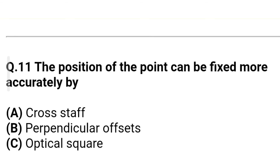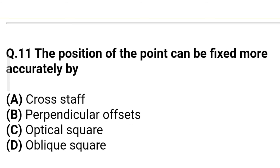Question 9: The position of a point can be fixed more accurately by — Option A: cross staff. Option B: perpendicular offsets. Option C: optical square. Option D: oblique square. The correct answer is Option B — perpendicular offsets.